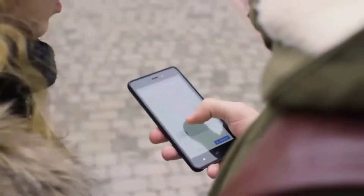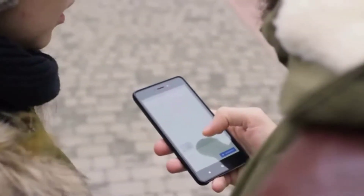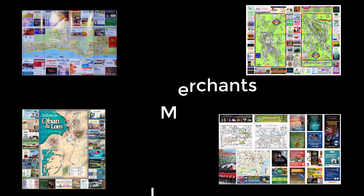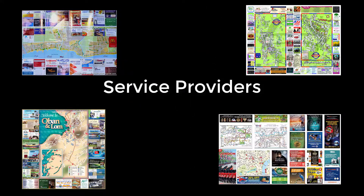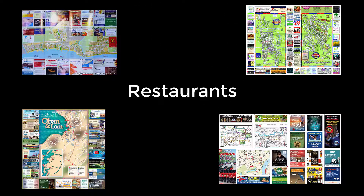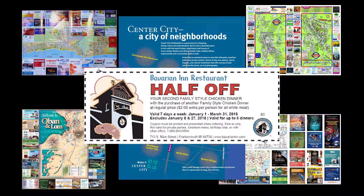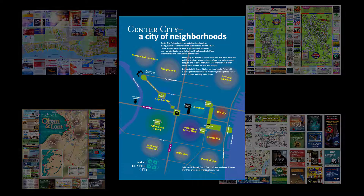Being replaced essentially by our cell phones and electronic maps. Nearby local merchants, service providers, and restaurants would all advertise in these guides, and there would be discount coupons and essential information about the community along with places of interest.